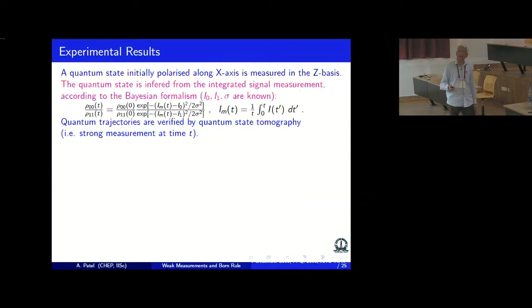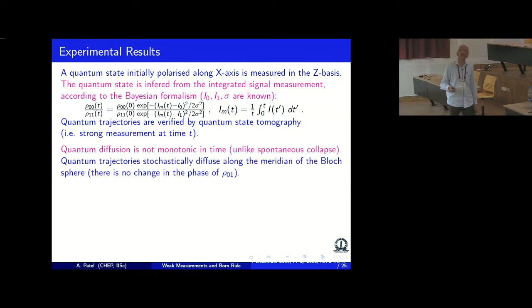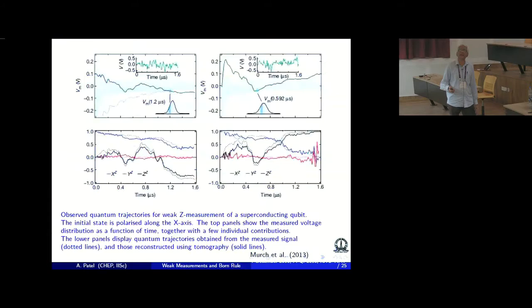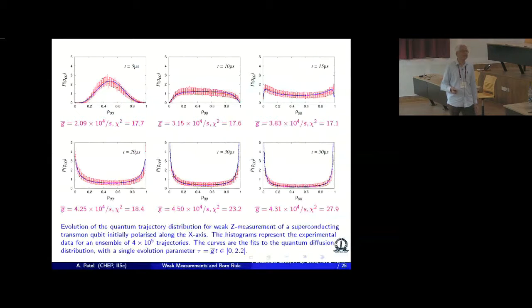And then you can construct from the observed signal the density matrix by using the Bayesian formulation. And which basically gives a quantum trajectory one by one. And you can do verification on those trajectories using quantum state tomography. I should mention that this is a diffusion process which goes back and forth, which is different than spontaneous collapse which is monotonic. And the diffusion basically takes place along the meridian of the Bloch sphere. And I have basically run out of time. So let me show you the experimental data and the theoretical fit.